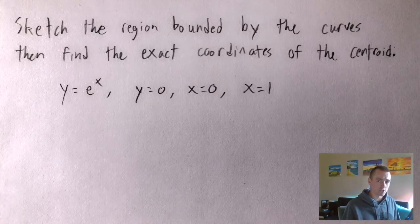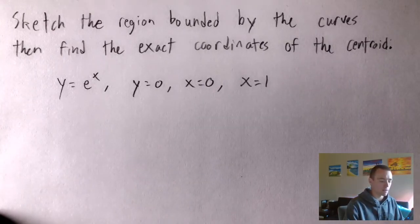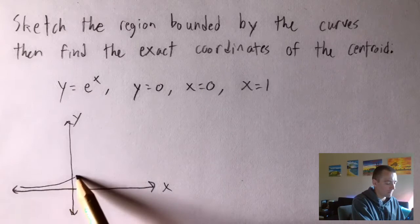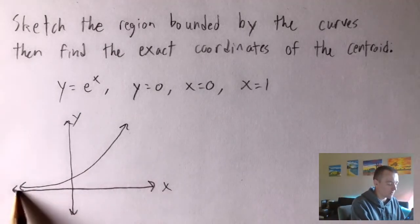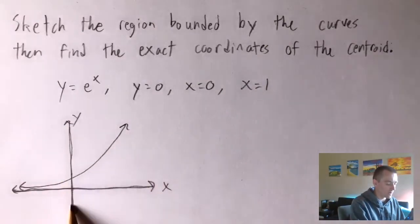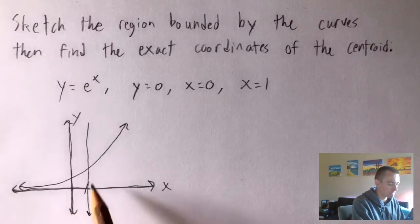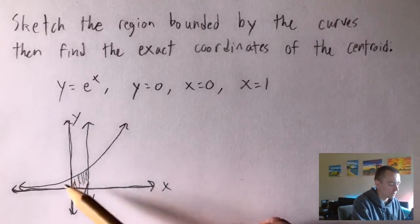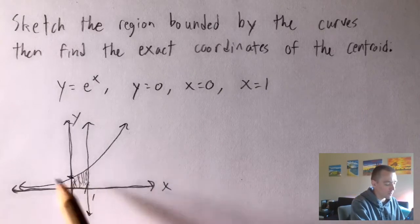The first thing we want to do is sketch the region bounded by these curves. I'd recommend doing that even if the problem didn't ask, because it helps confirm whether your answer is reasonable. So sketching on an xy-axis: y equals e to the x is just an exponential function with a horizontal asymptote at y equals 0. Y equals 0 is the x-axis, x equals 0 is the y-axis, and x equals 1 is a vertical line at x equals 1. The bounded region is right in between all of these, and y equals e to the x intersects the y-axis at 1.